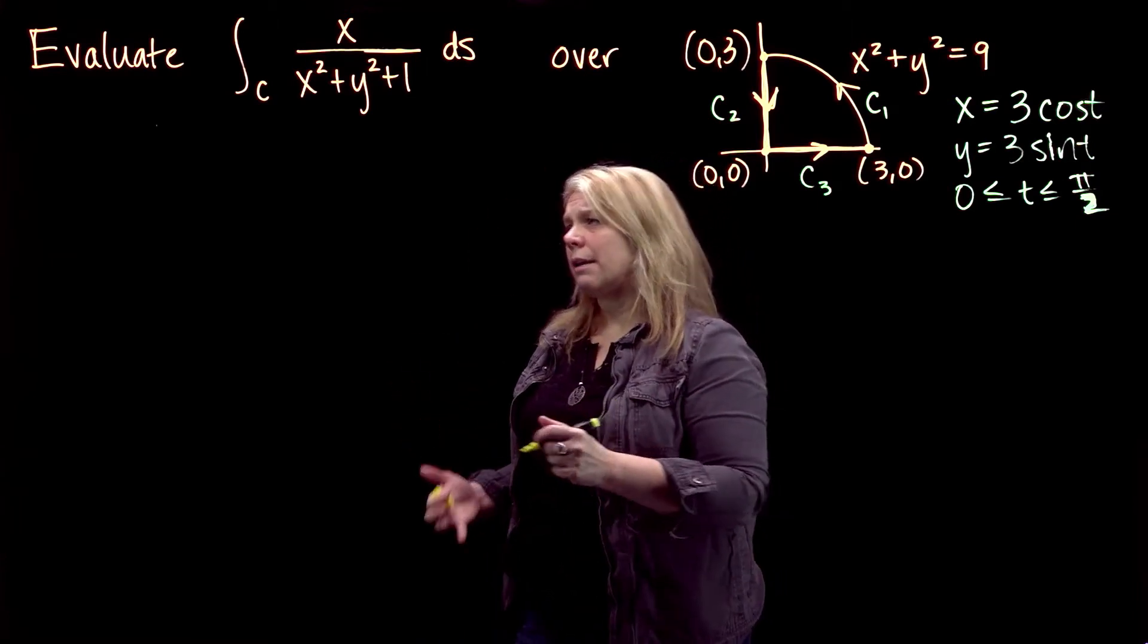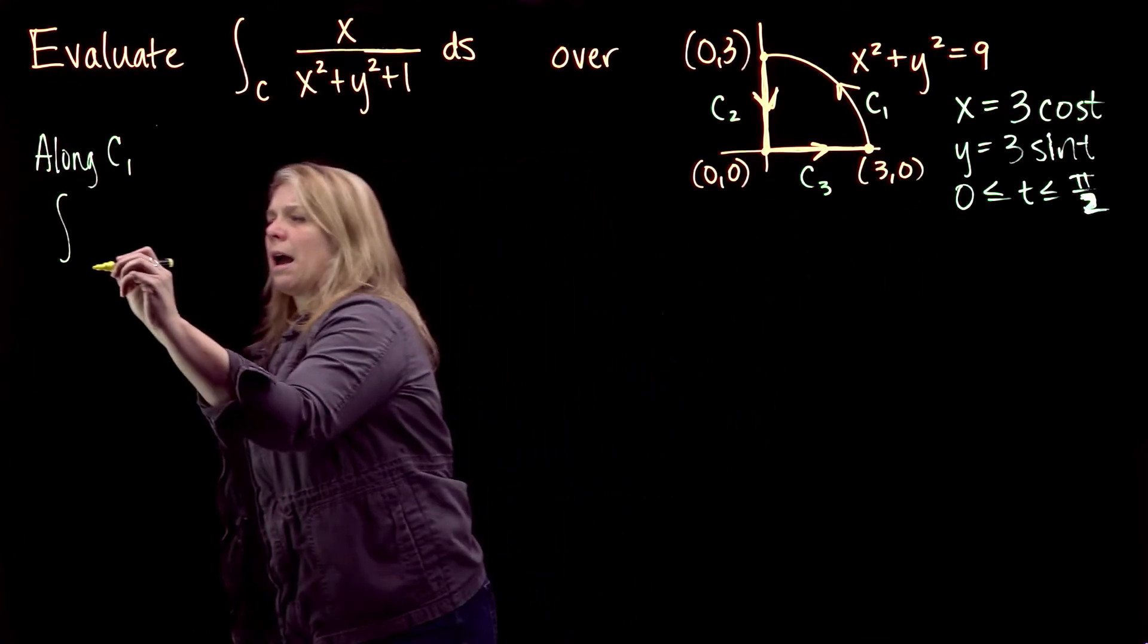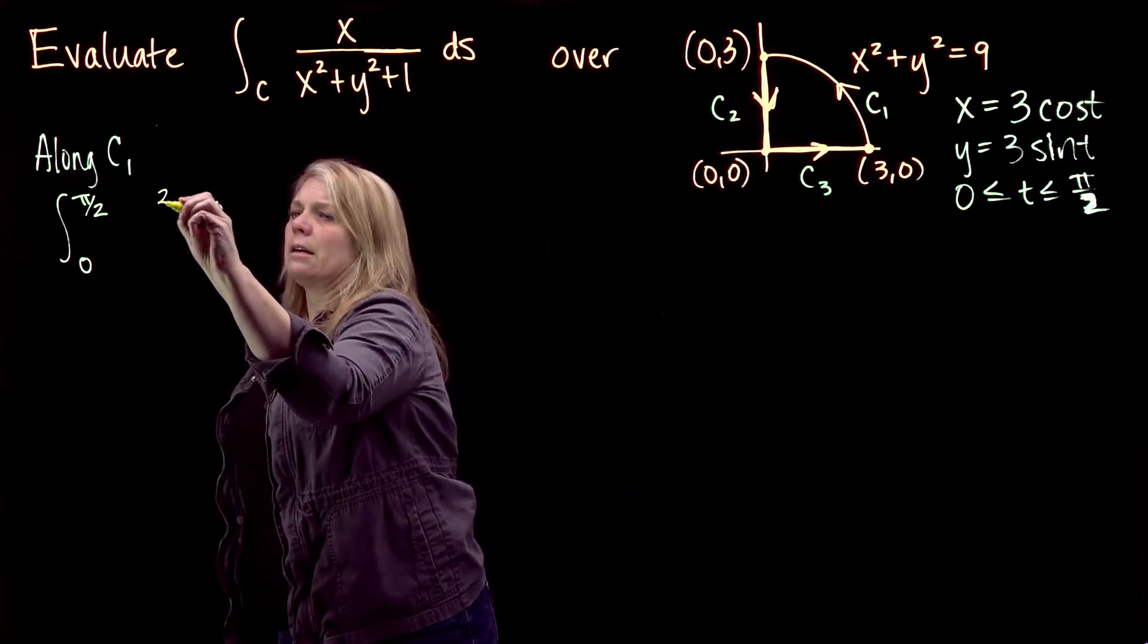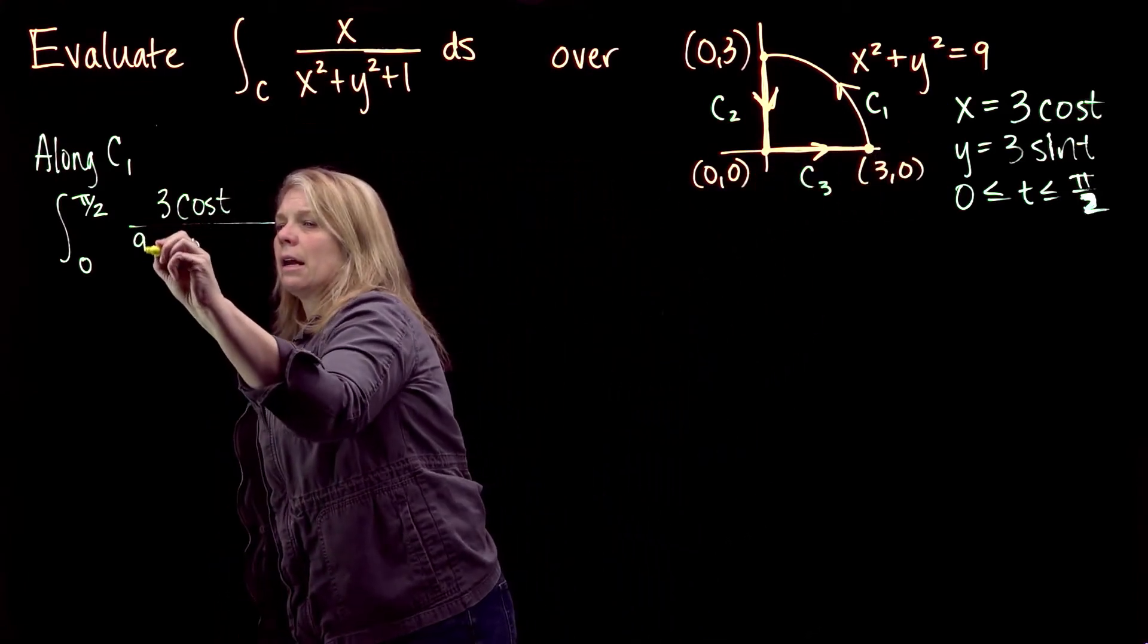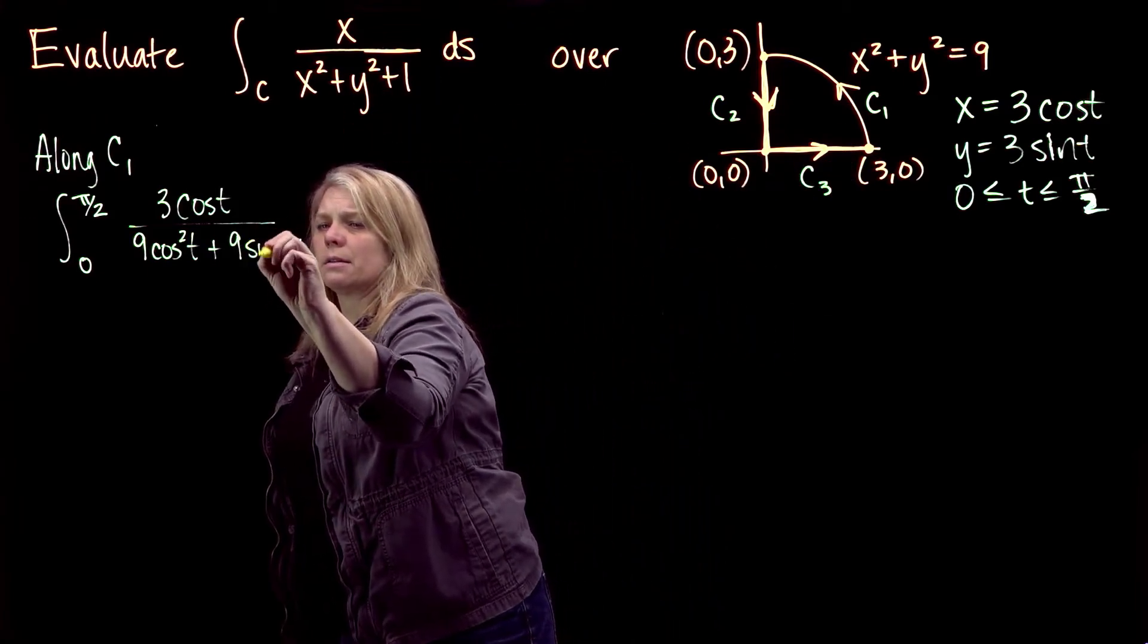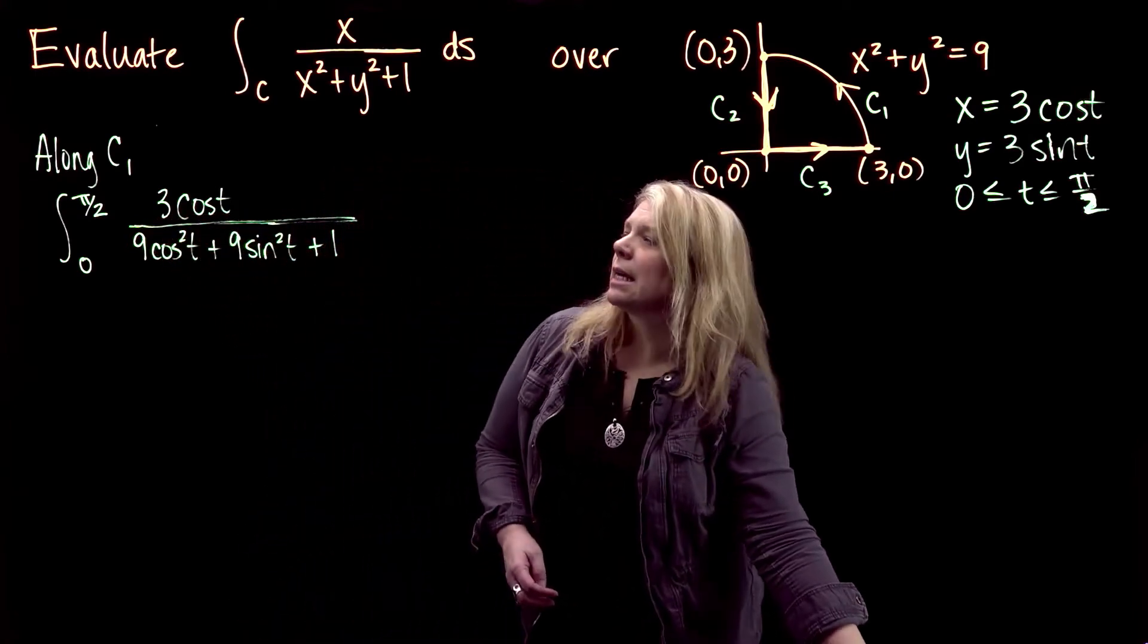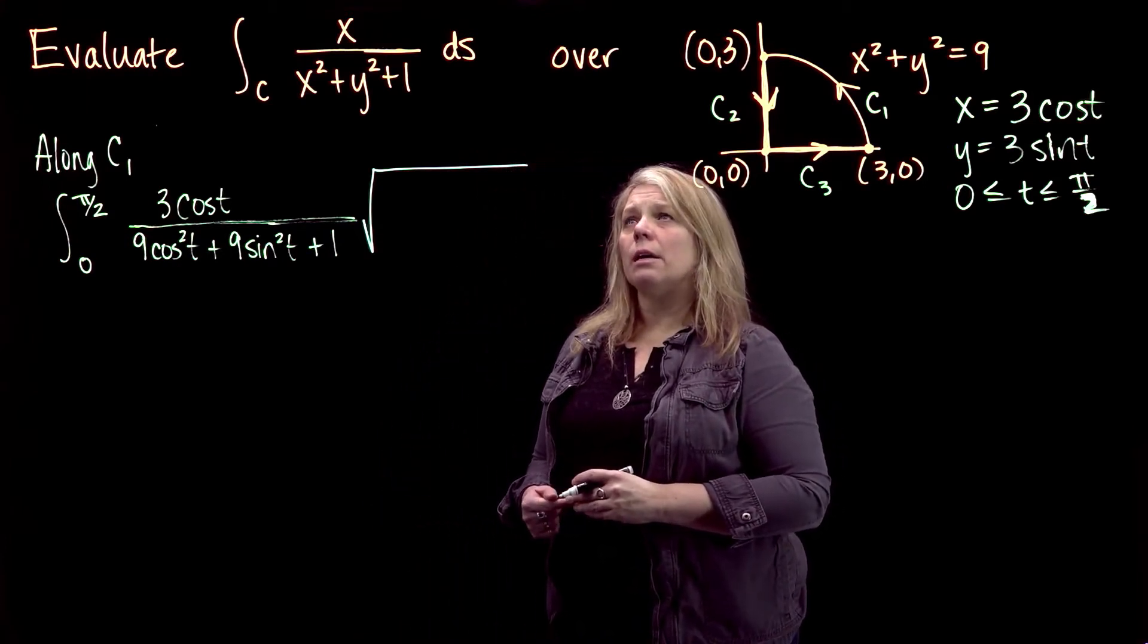So I'm going to do this in three different problems. Along C1, we're going to integrate from 0 to pi over 2. I'm going to integrate this function over this curve. Along that curve, x is given by 3 cosine t, so when I square that, I will have 9 cosine squared t. And y is given by 3 sine t, so when I square that, I will have 9 sine squared t plus 1. Our differential ds, remember that's that arc length differential, so that is the square root of dx/dt squared plus dy/dt squared.